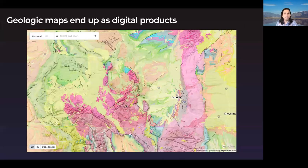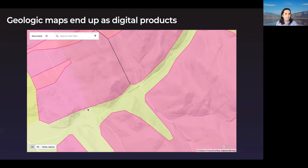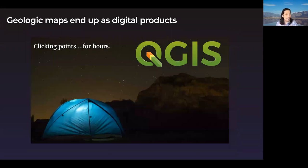The problem really arises that we don't have a shop full of people to draft our maps for us — that's kind of been lost to time. Geologic maps are going to end up as digital products anyway. This is a small plug for my current work at Macrostrat, which is on global-scale geologic maps of Earth. But it's going to be a digital product — so how does it get there? Unfortunately, the answer started off as me sitting in my tent after a day of mapping and basically clicking points in QGIS until my battery died.